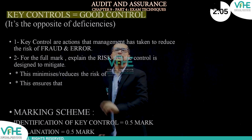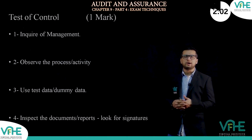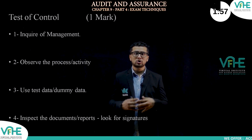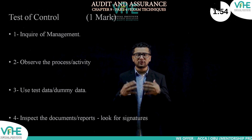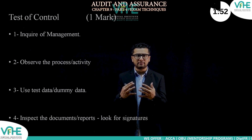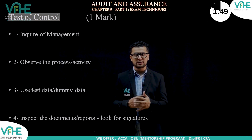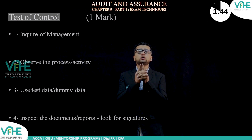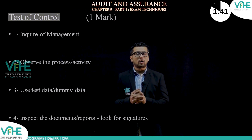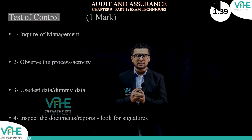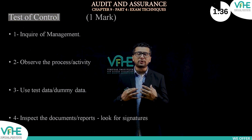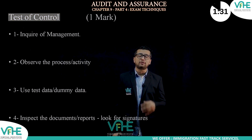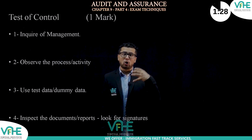If you have recommended certain controls to management, identified deficiencies, and explained them, the examiner will ask how you are going to test those controls. A test of control means the auditor performs certain actions — it is basically some kind of action performed by the auditor to verify those controls are operating effectively.